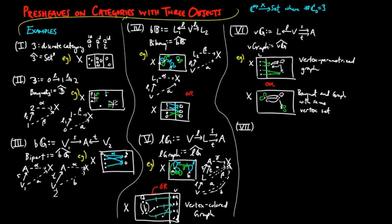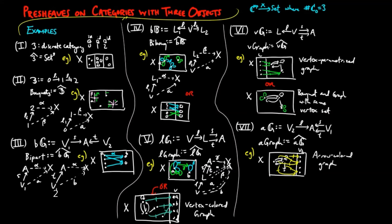If we switch the morphisms S and T around in LG, we get a category of arrow-colored graphs, where each arrow is assigned a V2 label.